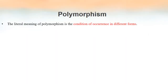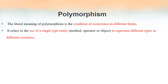Polymorphism means the condition of occurrence in different forms. It is an important programming feature that comes inside object-oriented programming languages. It refers to the use of a single type entity — it can be a method, an operator, or an object — to represent different types in different scenarios.